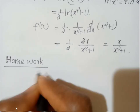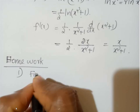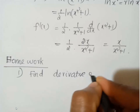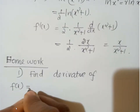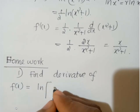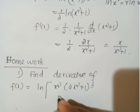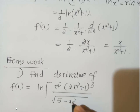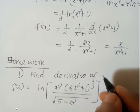This is a homework problem. Find the derivative of f(x) = ln[ x² · (2x² + 1)³ / √(5 − x²) ]. Find the derivative or rate of change.